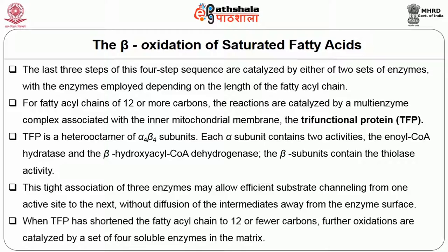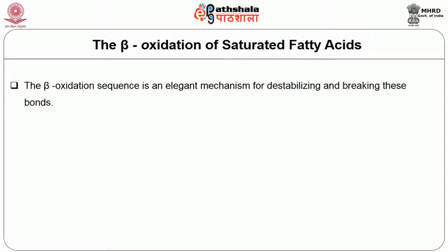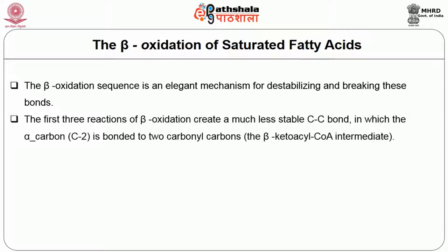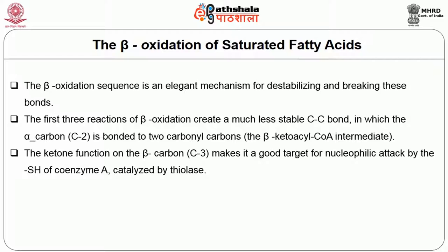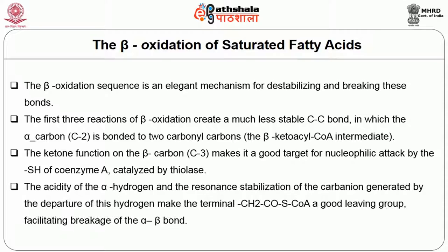When the trifunctional protein has shortened the fatty acid chain to 12 or fewer carbons, further oxidation is catalyzed by a set of four soluble enzymes in the matrix. The beta oxidation sequence is an elegant mechanism for destabilizing and breaking carbon-carbon bonds. The first three reactions of beta oxidation create a much less stable carbon-carbon bond, in which the alpha carbon is bonded to two carbonyl groups. The ketone function of the beta carbon makes it a good target for nucleophilic attack by the -SH of coenzyme A, catalyzed by thiolase. The activity of the alpha hydrogen and the resonance stabilization of the carbanion generated facilitate breakage of the alpha-beta bond.